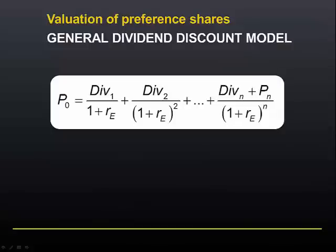We entered the previous module with this formula, which is called the General Dividend Discount Model. It says that the value of a share is the present value of all future dividends plus the present value of the price that you receive when you sell the share.